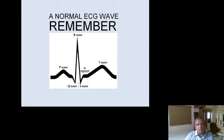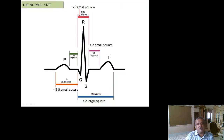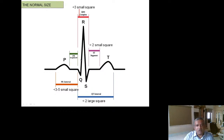The normal ECG wave components are P, Q, R, S, ST segment, and T — called PQRST because earlier letters A through E were already taken. Remember the rule of three: PR interval is 3 to 5 small squares; QRS is less than 3 small squares; QT is less than 2 large squares. The ST segment and PR segment are always isoelectric in a normal tracing.